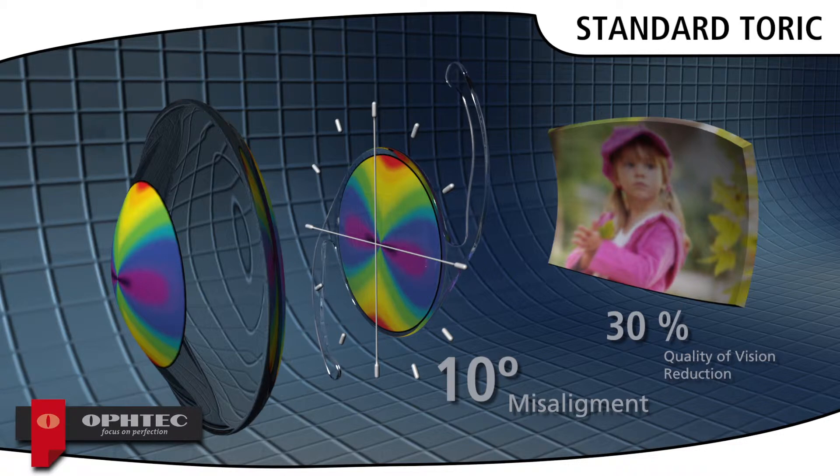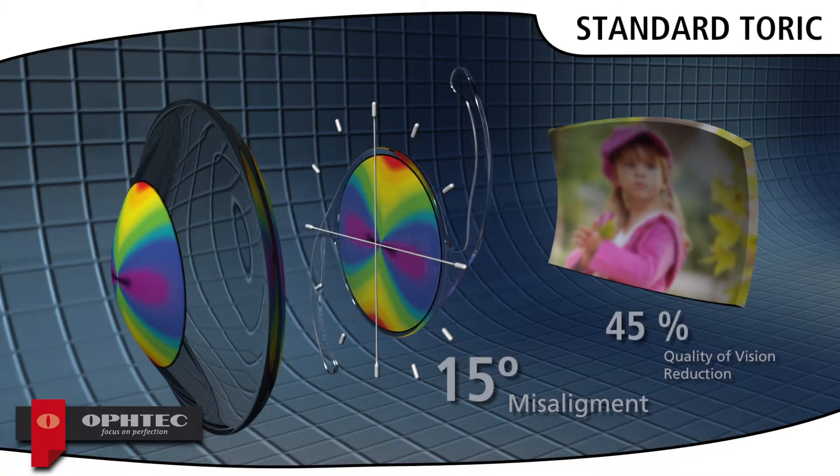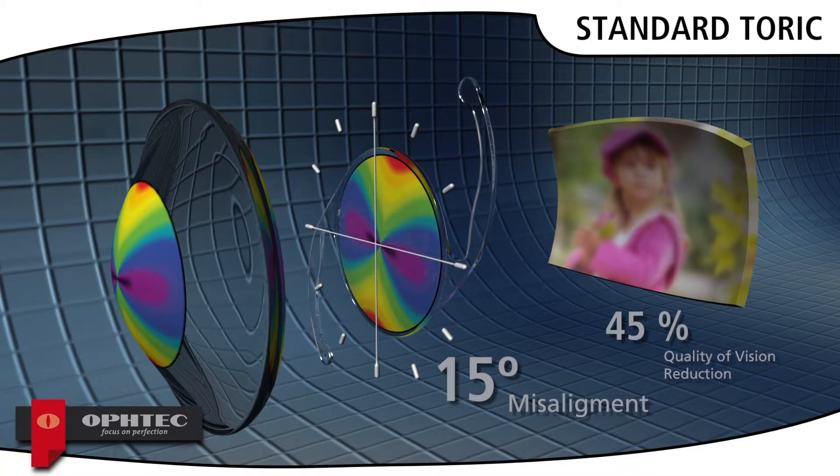30% if misaligned by 10 degrees, and 45% if misaligned by 15 degrees.